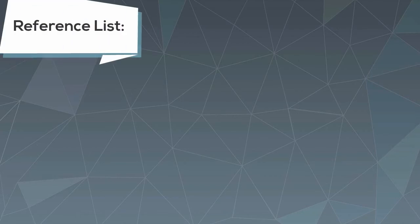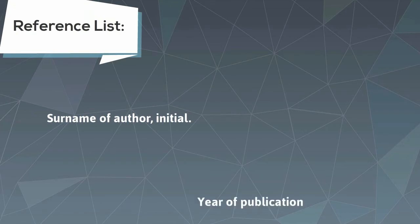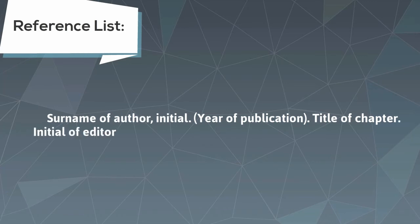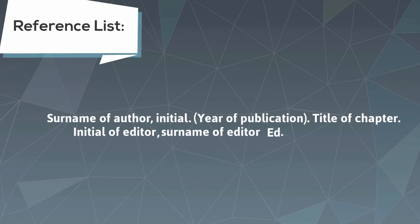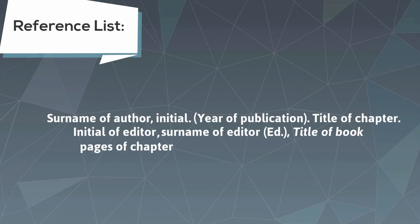So, your reference list should look something like this: Surname of author, comma, initial, full stop, year of publication in brackets, full stop, title of chapter, full stop, initial of editor, comma, surname of editor, ed, full stop, in brackets — if there is more than one editor — comma, followed by the title of the book in italics, the page numbers of the chapter in brackets, full stop, city of publication, colon, name of publisher, full stop.